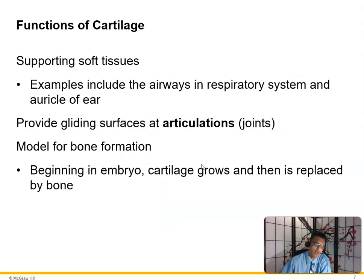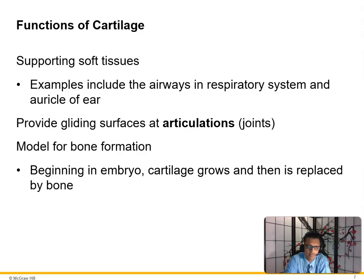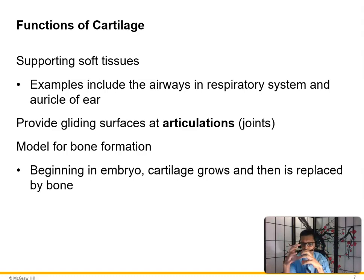Functions of cartilage include supporting soft tissue — for example, the airways in the respiratory system and the auricle of the ear — providing a gliding surface for joints, and serving as a model for bone formation. Beginning in the embryo, cartilage grows and is then replaced by bone. The embryonic skeleton is cartilage because it allows the flexibility needed to pass through the birth canal.